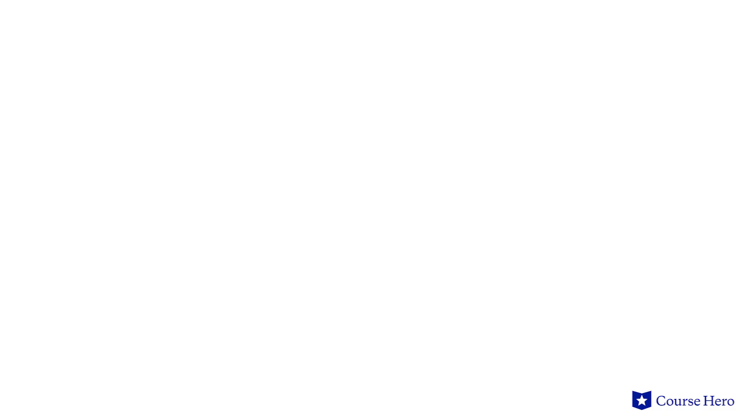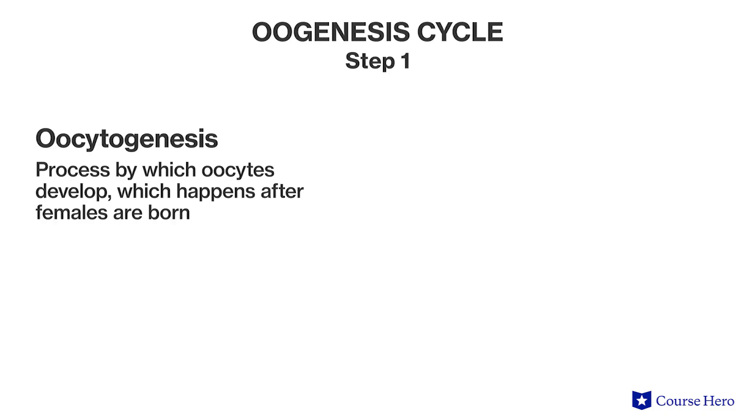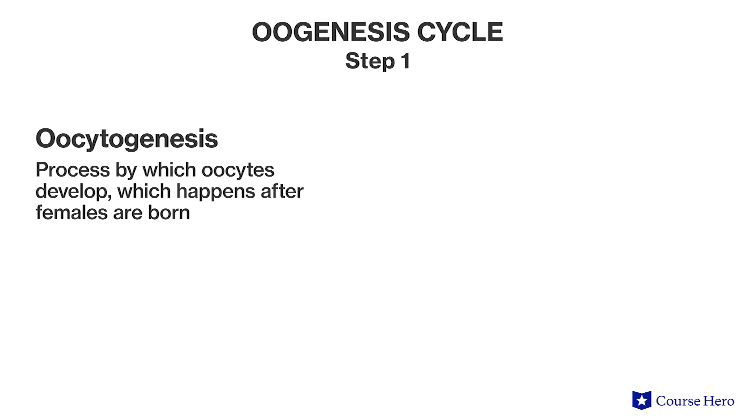The formation of oocytes involves the following steps. Step one: the first true step of oogenesis is oocytogenesis — the process by which oocytes develop, which happens after the female is born. During oocytogenesis, the oogonia undergo mitosis to form the primary oocytes, which are diploid. It is thought that oocytogenesis is complete shortly after birth, but this idea has recently been challenged and is under investigation by researchers.